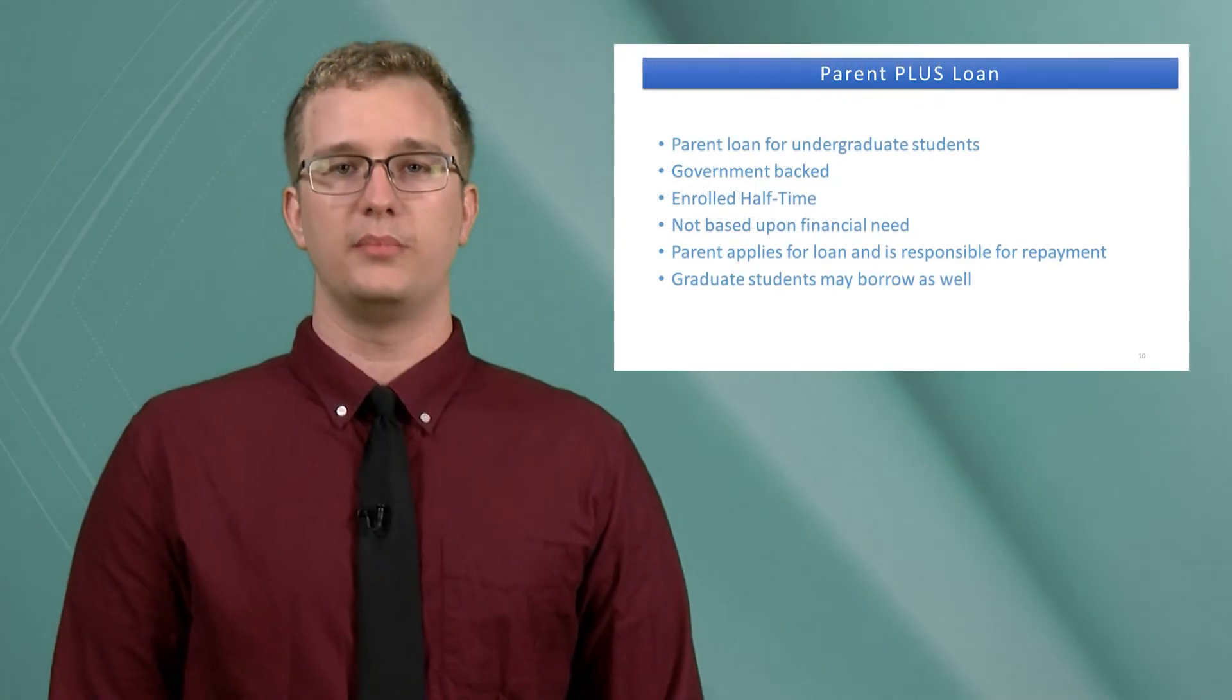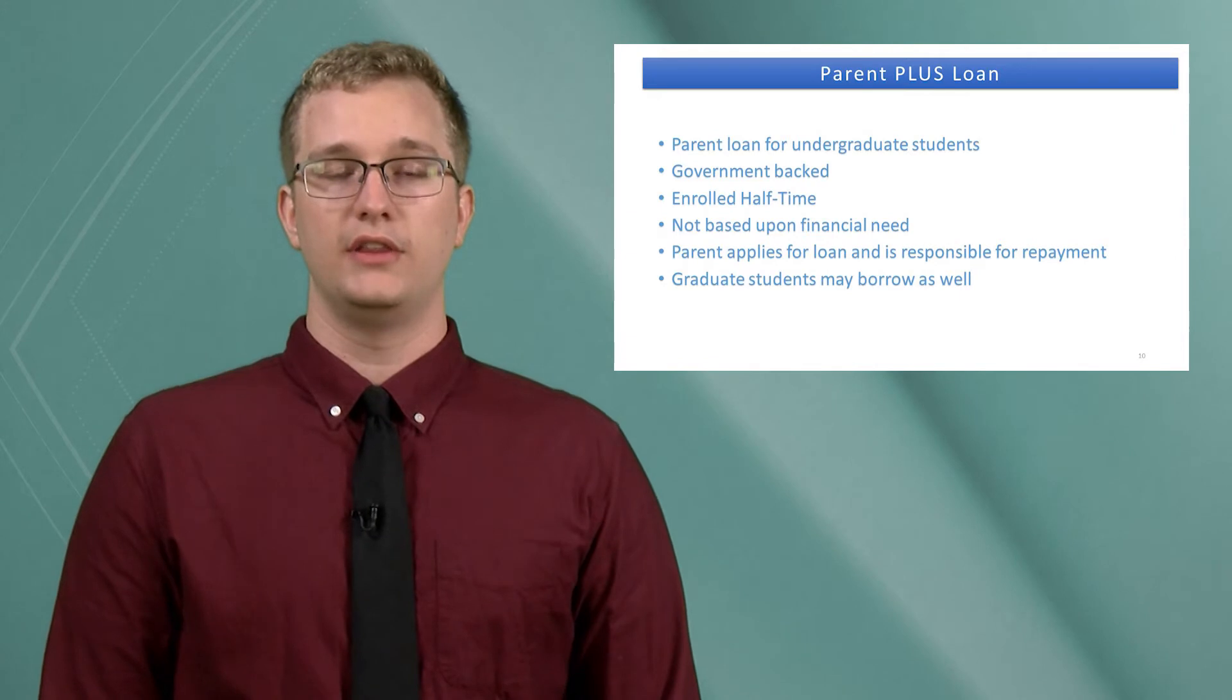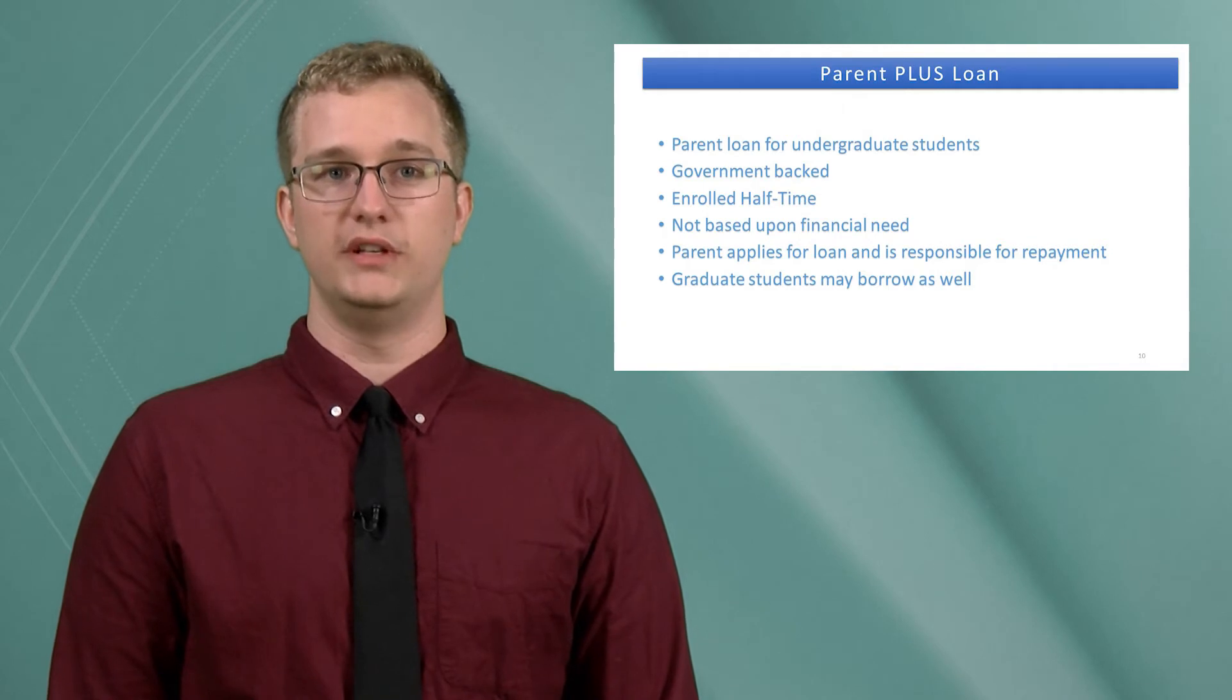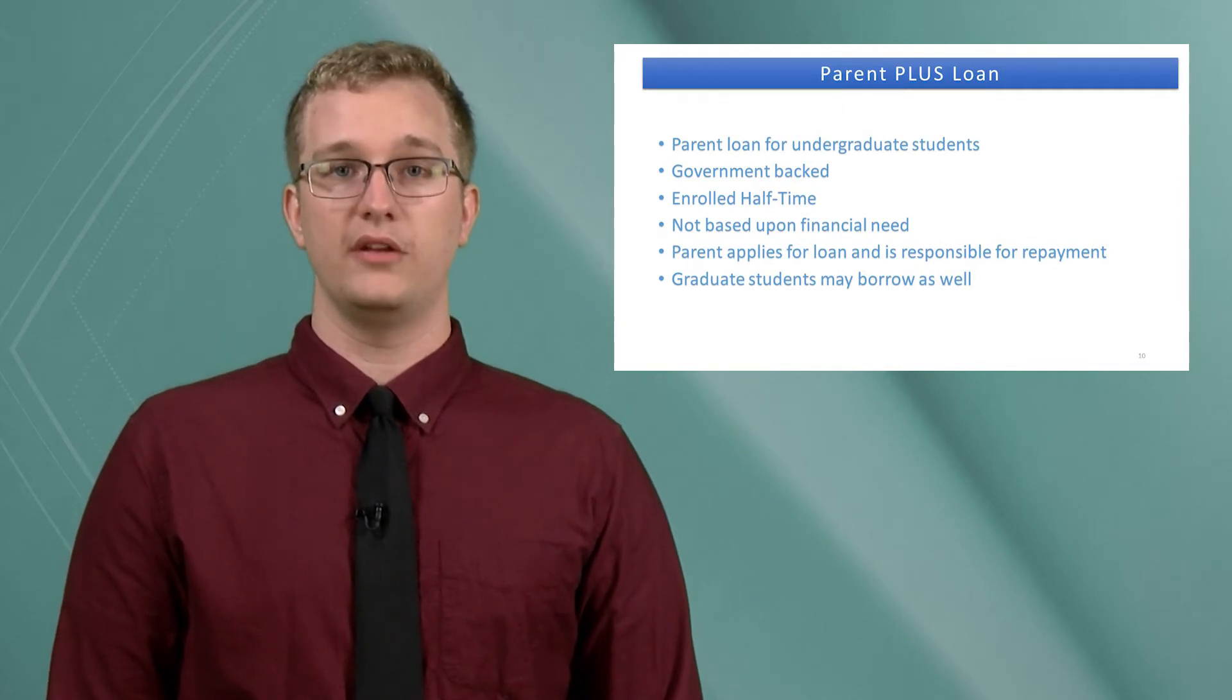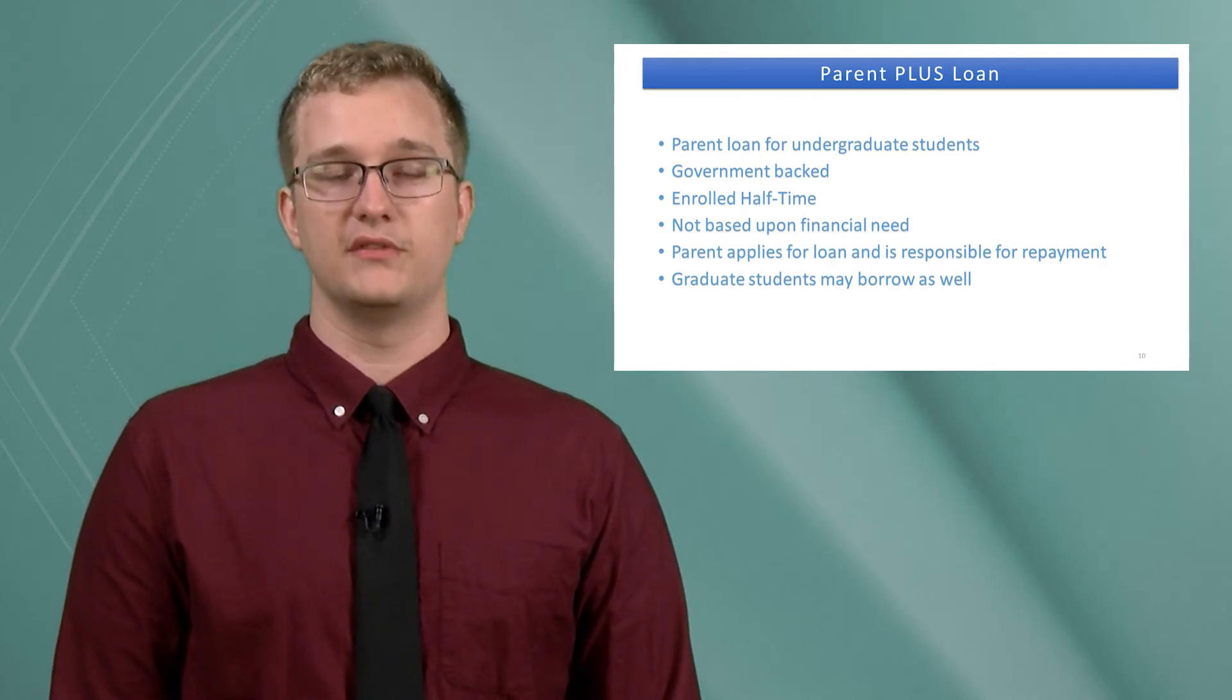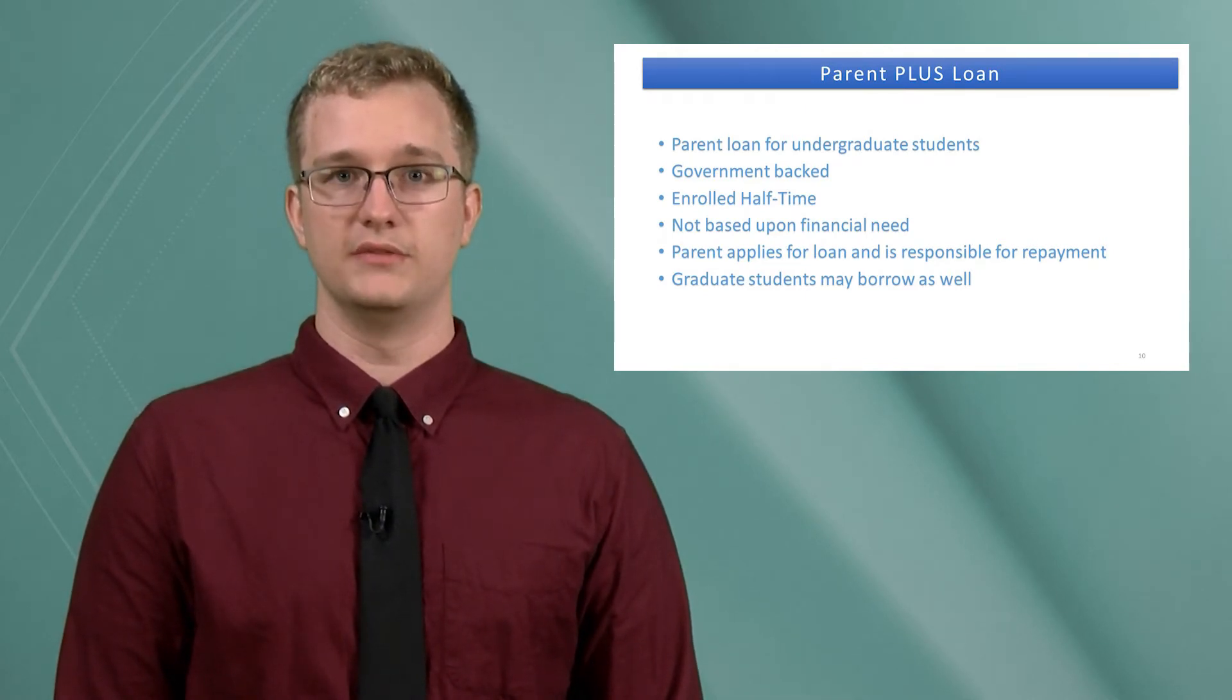Now let's talk about Parent PLUS loans. They're parent loans for current undergraduate students that are backed by the government. In order to receive such a loan, the student must be enrolled at least half-time. They're not based upon any financial need. When the parent applies for the loan, they are held responsible for it. Graduate students may borrow these types of loans as well, however they have to reach their limits for unsubsidized and subsidized loans first.